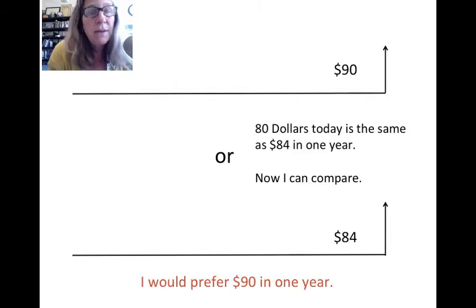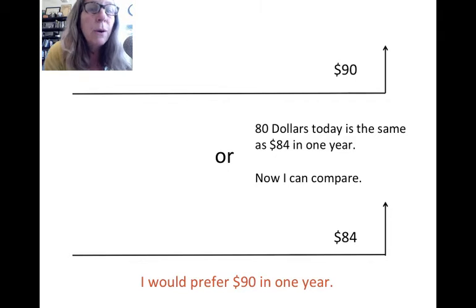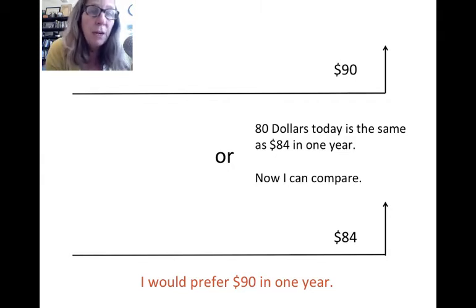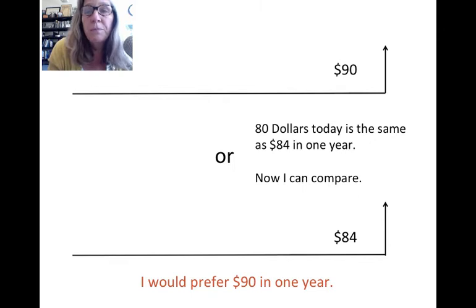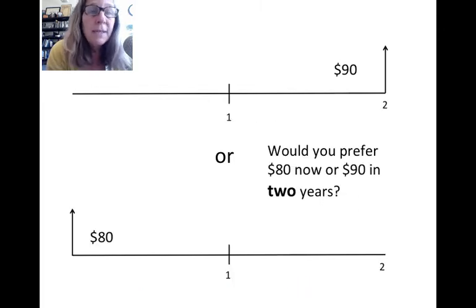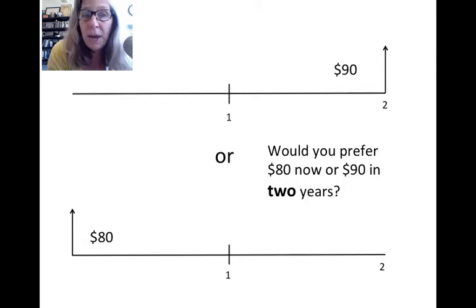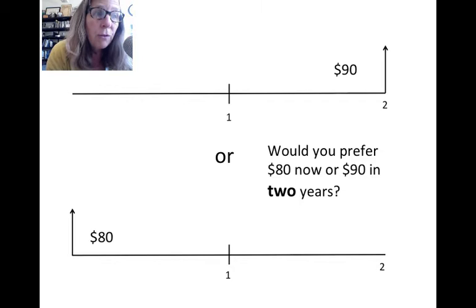Now both investments are occurring at the same period of time. The question is: would I prefer $90 in one year or $84 in one year? It's easy to decide — we'd prefer $90. So we take the $90 option. Now what happens if the time is two years? We need to look at how interest behaves, and in engineering economy we use compounded interest.